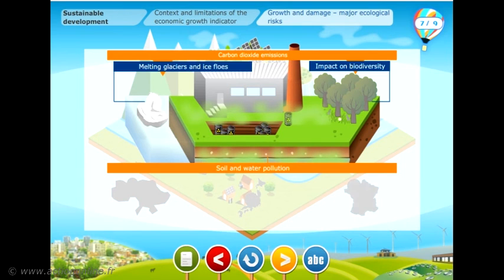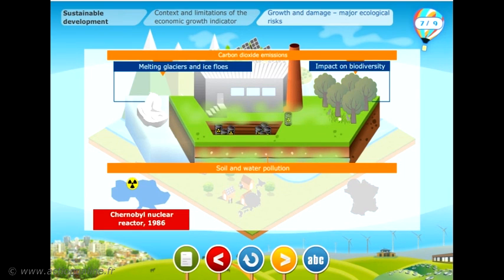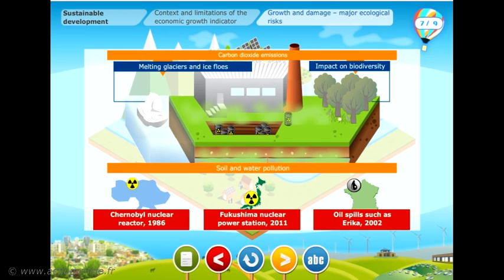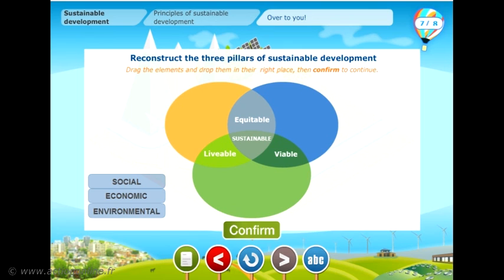Numerous technological accidents have also taken place over the last century: the explosion of the Chernobyl nuclear reactor in Ukraine in 1986, the accident at the Fukushima nuclear power station in Japan in 2011, and oil spills such as the Erika in 2002.